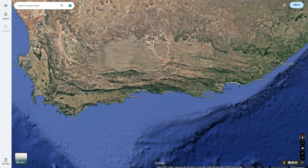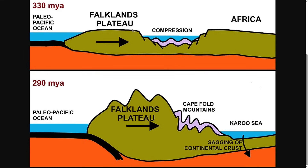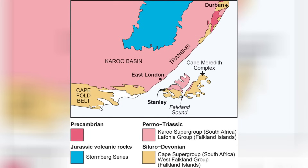The Falklands formed as part of the Cape Fold Belt, which today are on the southern coast of South Africa. These mountains formed around 300 million years ago when the Paleo-Pacific Ocean plate collided with the Falklands plateau and made it crash into Africa, forming the Cape Fold Mountains, which the Falklands were a part of. Here's a map of the rough location of the Falkland Islands in relation to the Cape Fold Belt, although this map uses modern boundaries, whereas the Falklands would have been connected to the Cape Fold Belt.